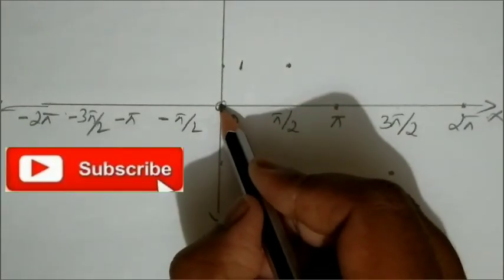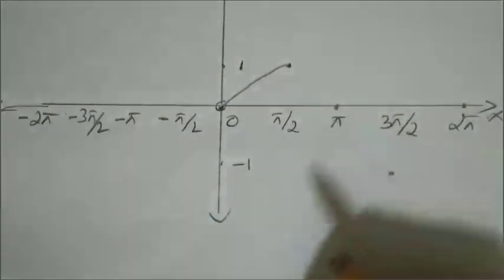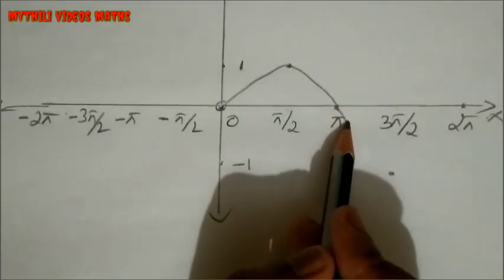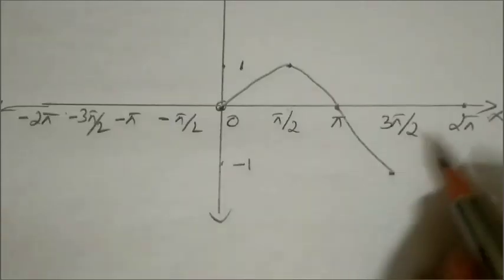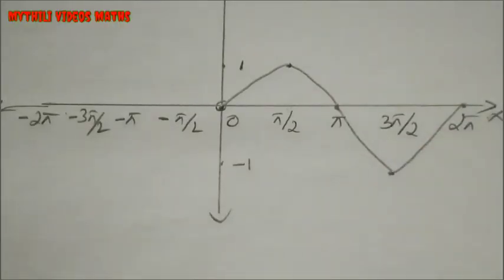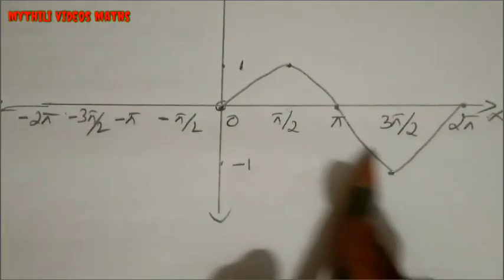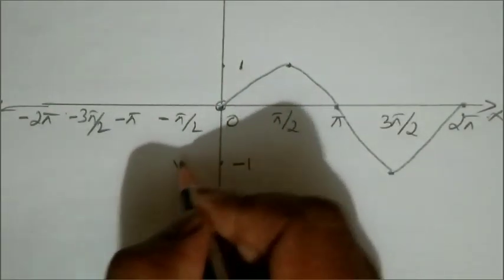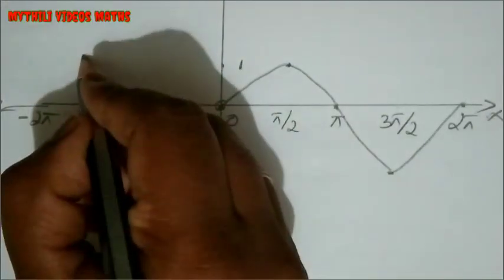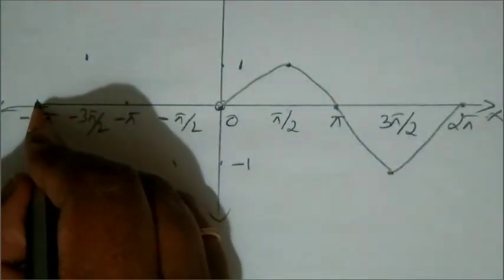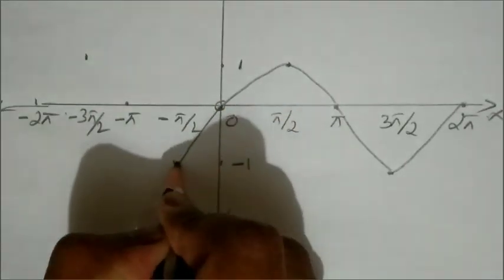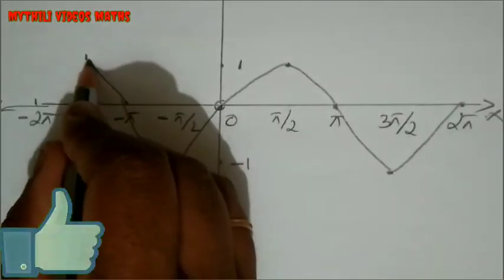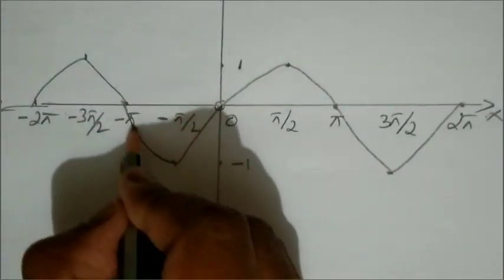We draw the x-axis and y-axis, drop the points, and connect them. Starting from 0, bending up to 1 at π/2, back to 0 at π, down to minus 1 at 3π/2. On the left side, since sin(-x) equals minus sin x, the curve is the reflection — go left and the value at minus π/2 is also 1, going up.